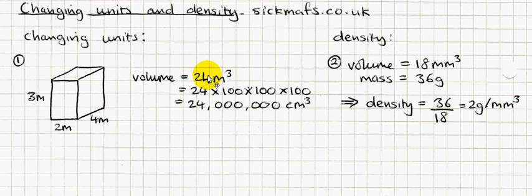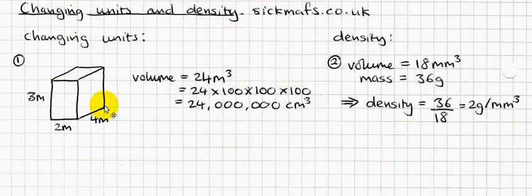If I want to convert that into centimeters cubed, I'd have to express this in centimeters, so that's 300 by 200 by 400. An easy way of working that out is just to do 3 times 2 times 4, then times it by 100, times it by 100, times it by 100. So that's 24 times 100 times 100 times 100 — every time you times by 100 you add two zeros, so basically I add six zeros, which gives me 24 million centimeters cubed.